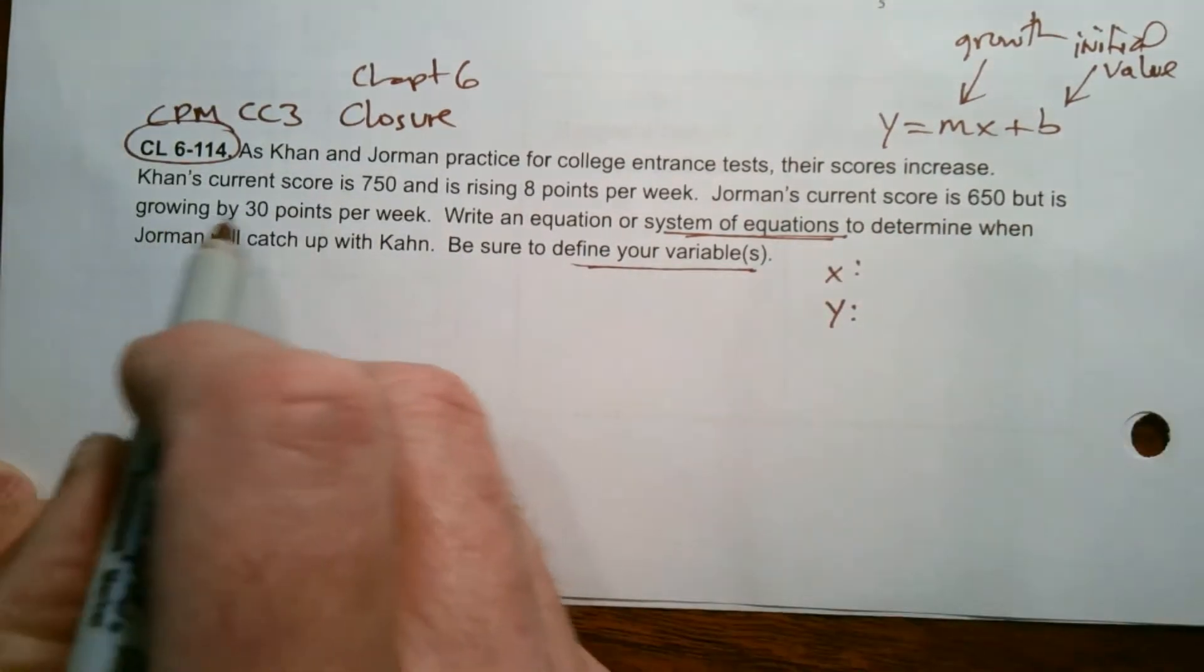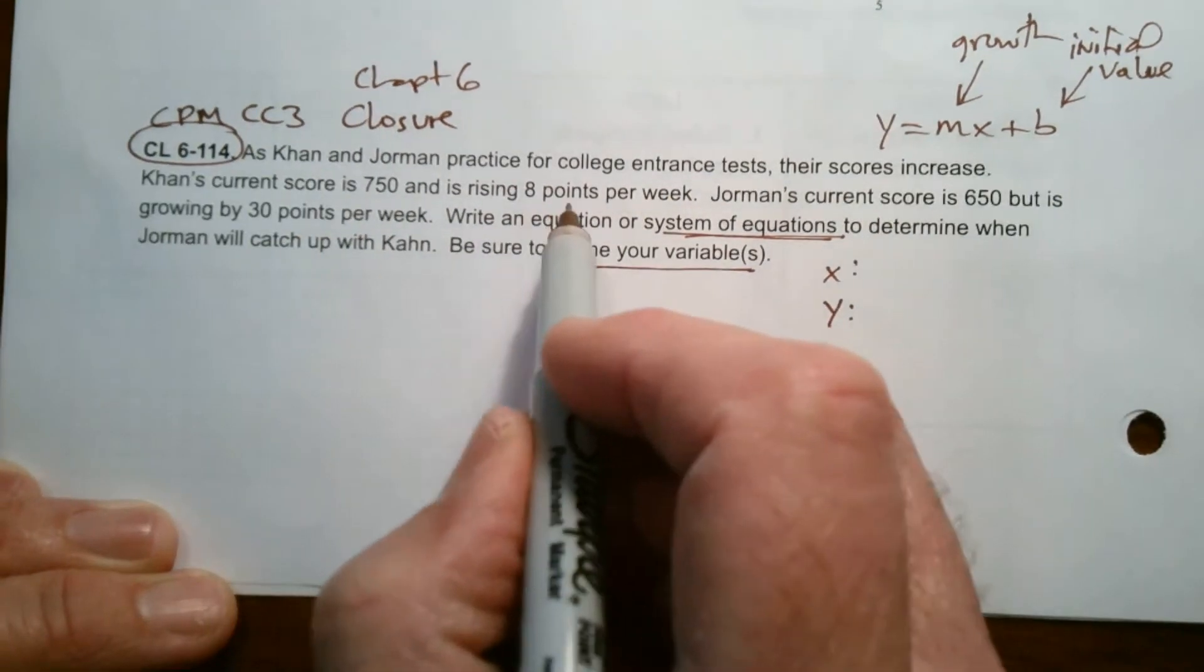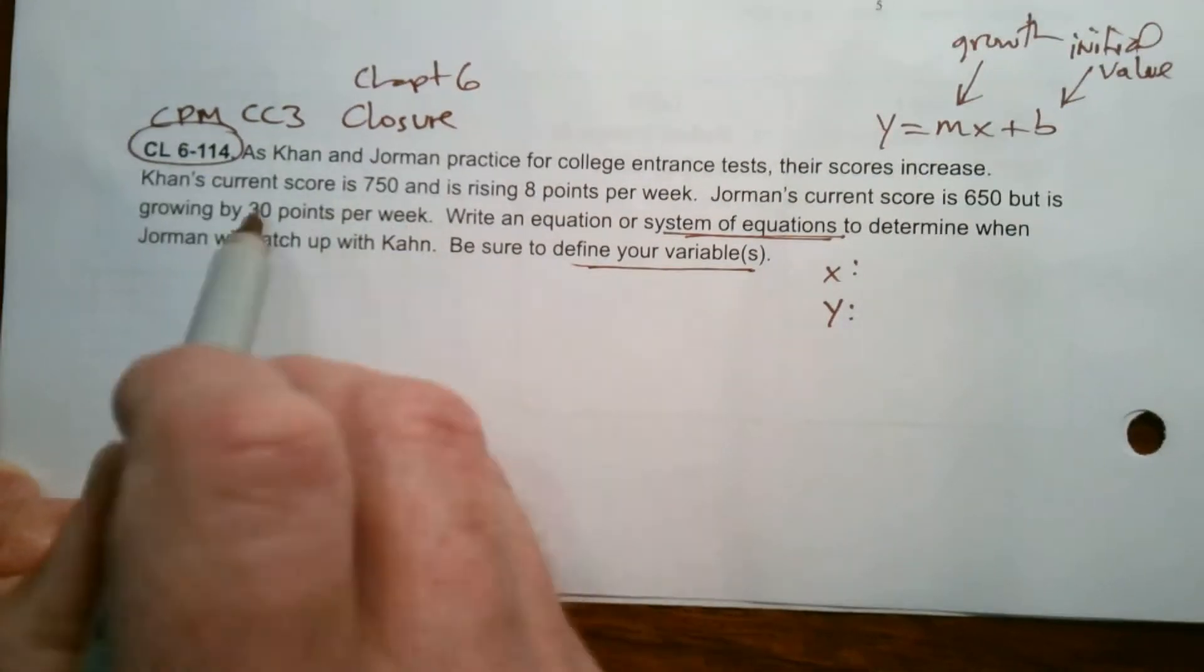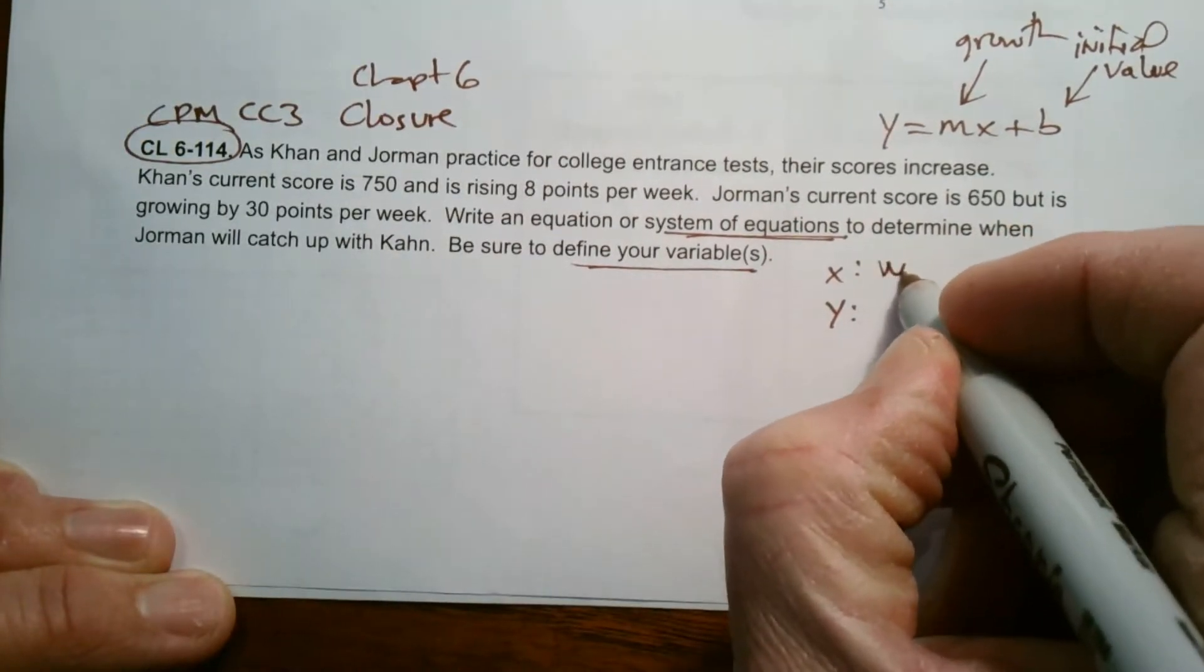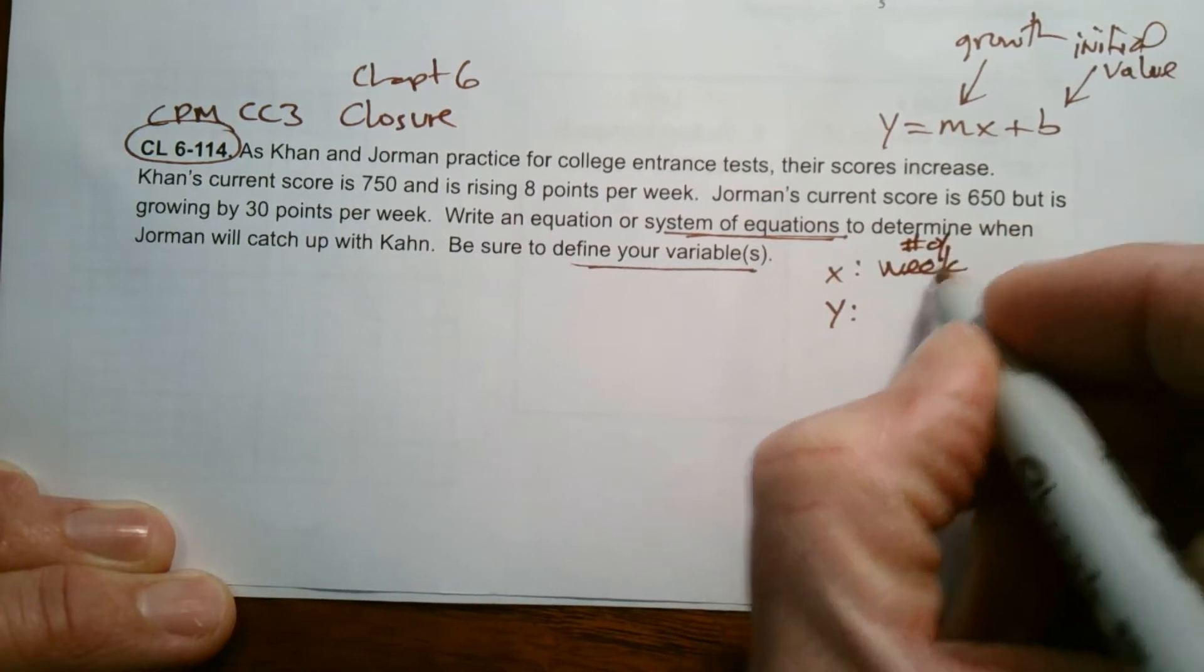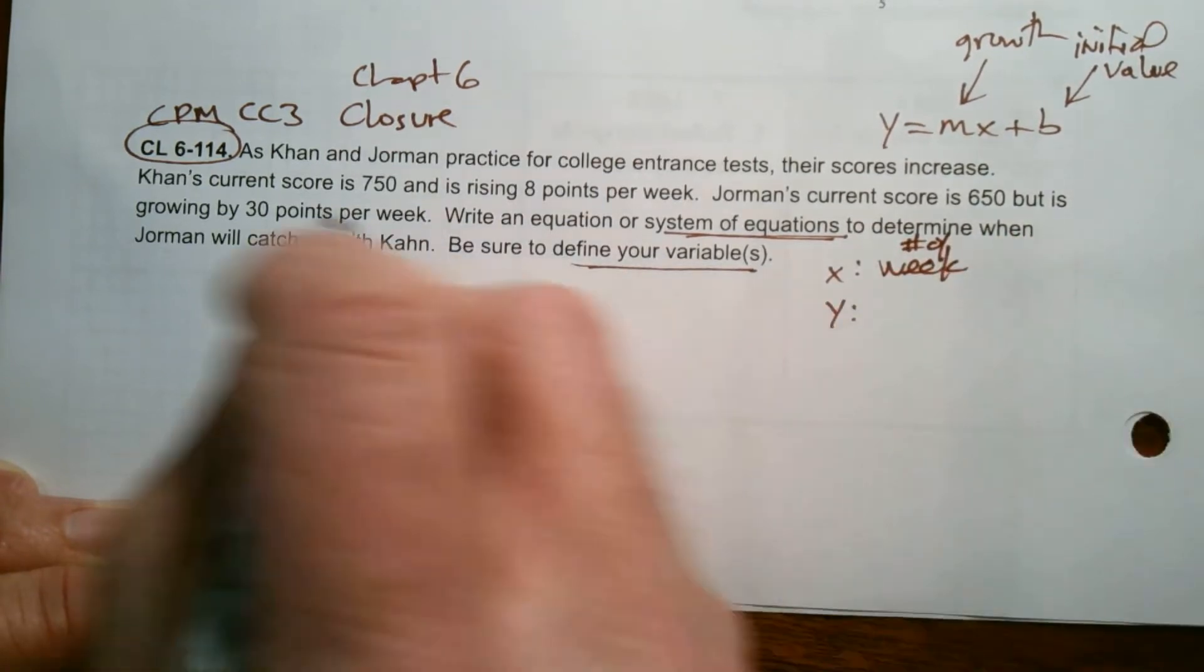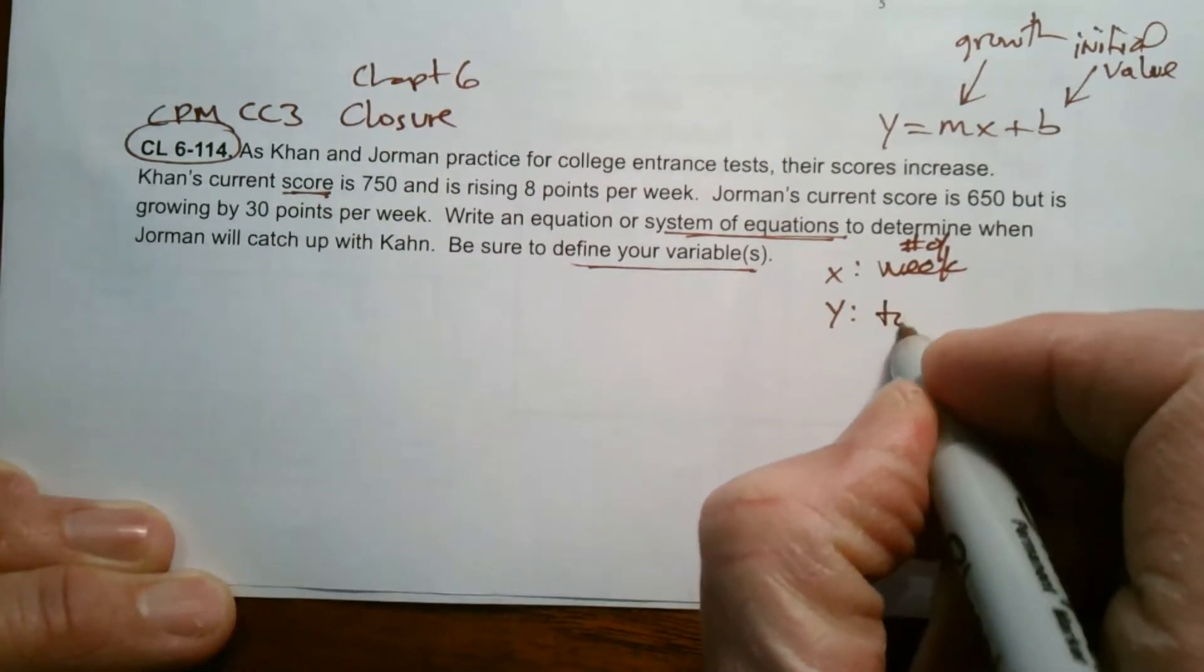So that's Khan. Jorman's score is 650 but is growing 30 points per week. So there's some growth here. So I'm going to name weeks, the number of weeks, as my X. And then Y, we're talking about scores, so Y is going to be the total score.